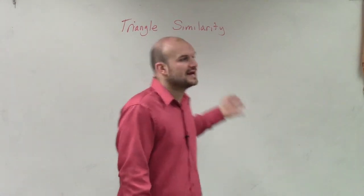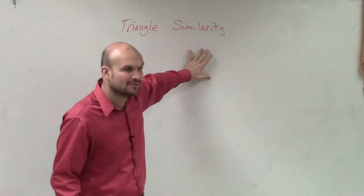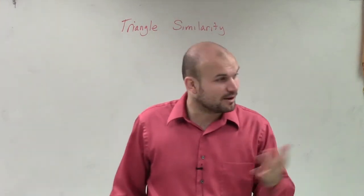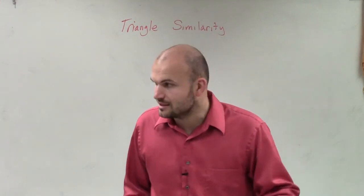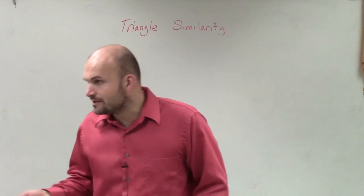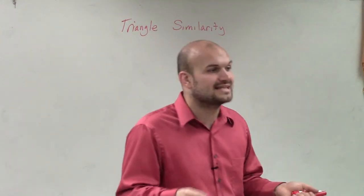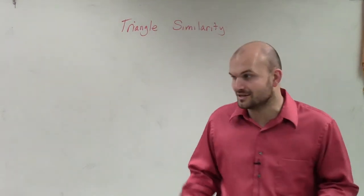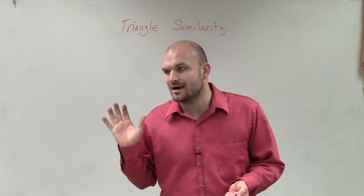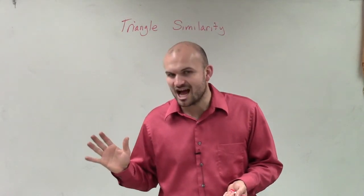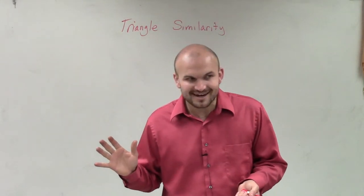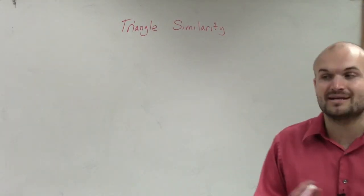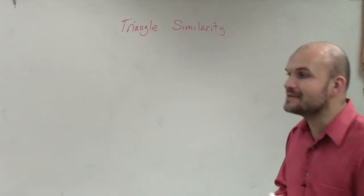Now what we're going to do is say, how do we show things are similar? Previously in our notes, we talked about what is similarity compared to congruence. Similarity has exactly the same shape, but not necessarily the same size — they have the same shape, but not necessarily the same size.